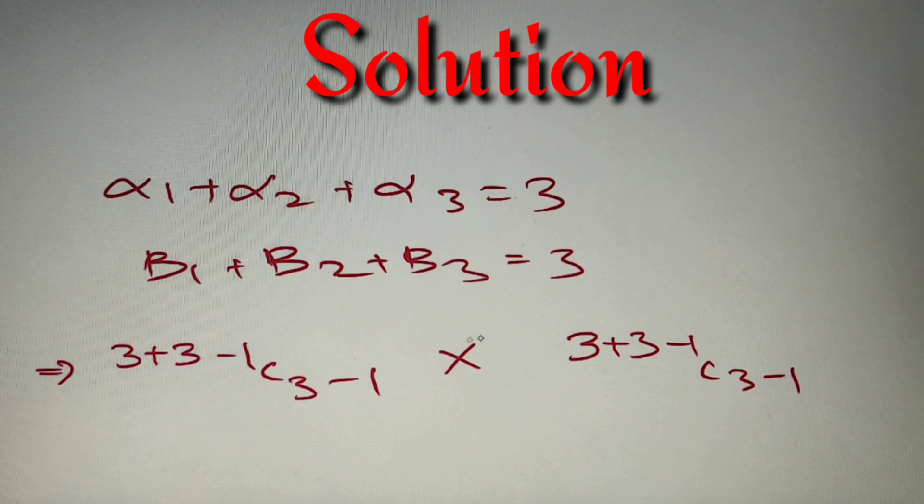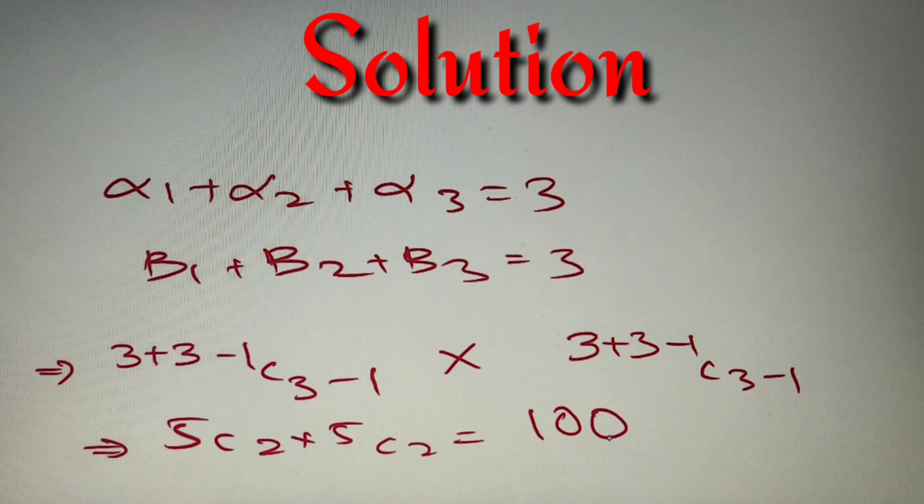We'll use multiplication. This is because the condition will be fulfilled when we multiply both cases, not add. So the total number of solutions is 5C2 × 5C2. As we know, 5C2 equals 10, so the answer is 10 × 10 = 100.